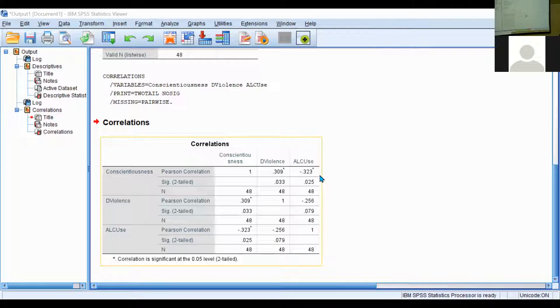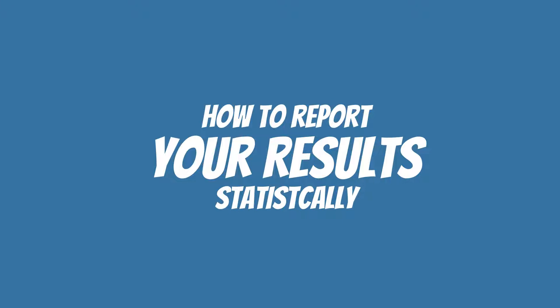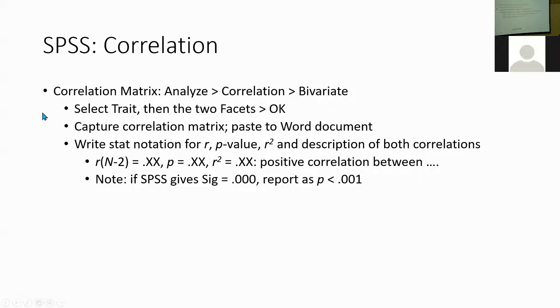You'll want to have all of these copied to your Word document — the descriptive table and the correlation matrix. For your correlation matrix in your Word document, you'll want to write underneath it your stat notation. The stat notation should include the correlation, the p-value, and the coefficient of determination. You'll also want to include a description of the correlation at the end of each notation.